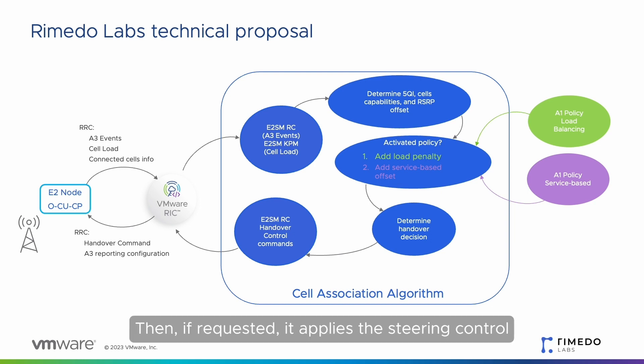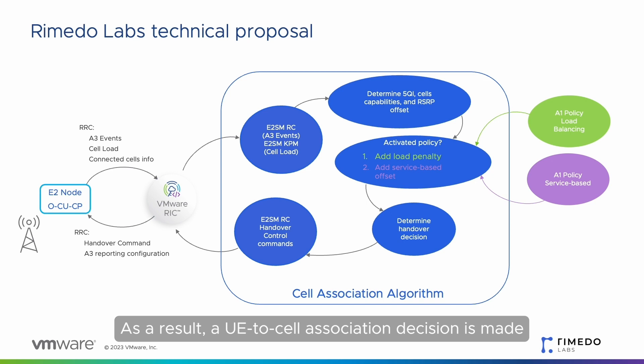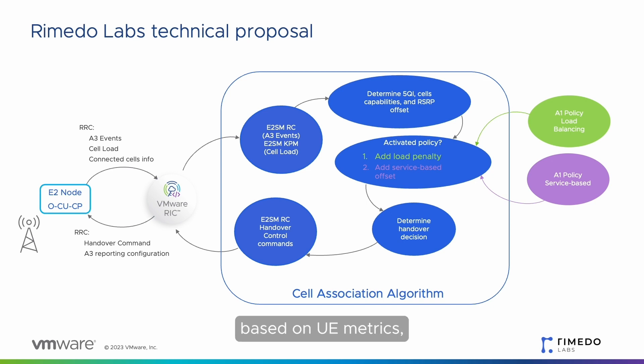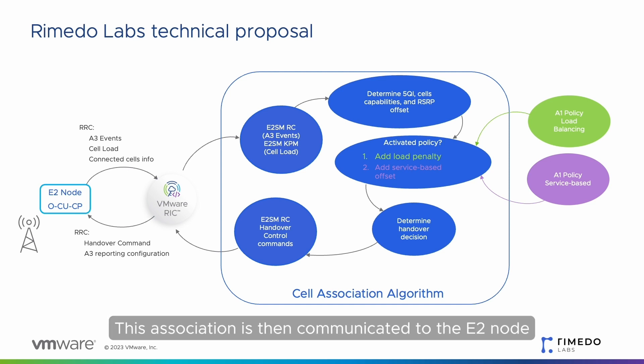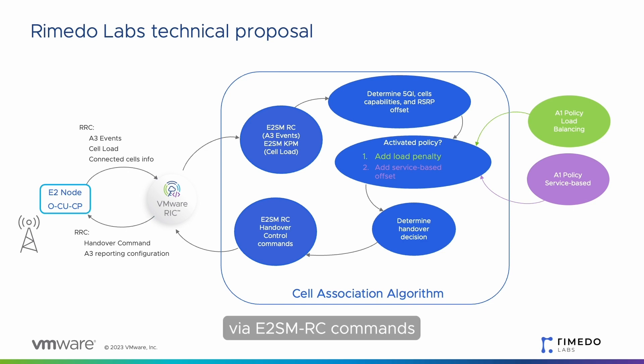Then, if requested, it applies the steering control policies communicated via the A1 interface. As a result, a UE to cell association decision is made based on UE metrics, cell capabilities, and current cell load. This association is then communicated to the E2 node via E2 SM RC commands.